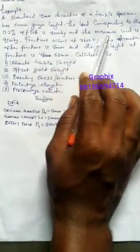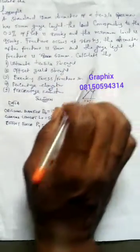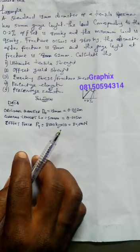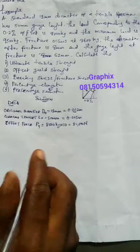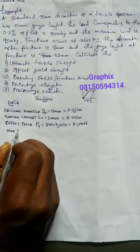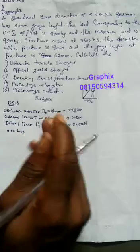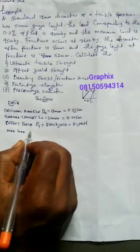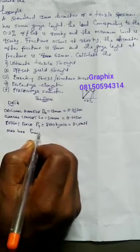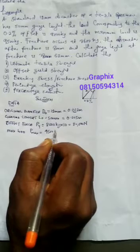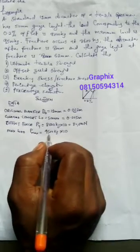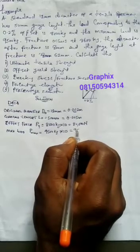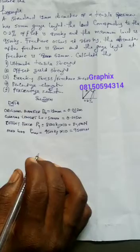The maximum load is 9,500 kilogram — that is the ultimate force the specimen can take. So the maximum load, or ultimate force, P_max, is given as 9,500 kilogram. Converting: 9,500 times 10 gives 95,000 Newton. That is the maximum load.